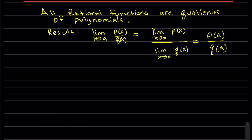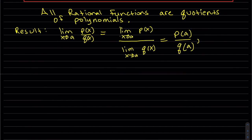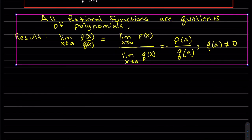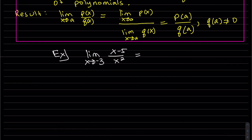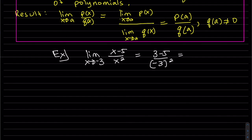Since all rational functions are quotients of polynomials, if we take the limit of a quotient of polynomials, we can just plug it in — as long as q of a doesn't equal 0, meaning the denominator doesn't equal 0. So since we have polynomials here, we can just plug in negative 3 for x and get our answer.